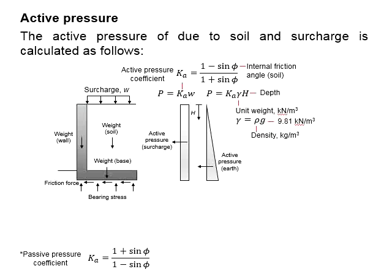The active pressure can be detrimental to the stability of a retaining wall. Excessive active pressure can lead to overturning, sliding, and settlement of a retaining wall.